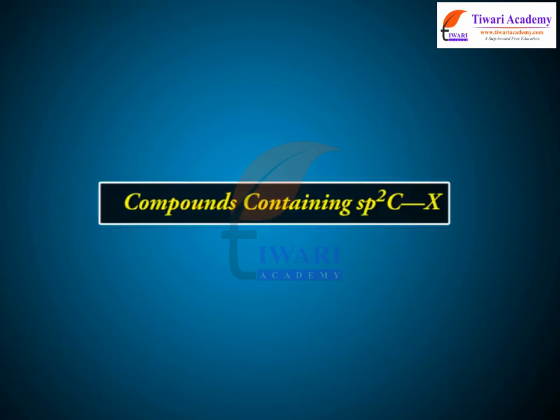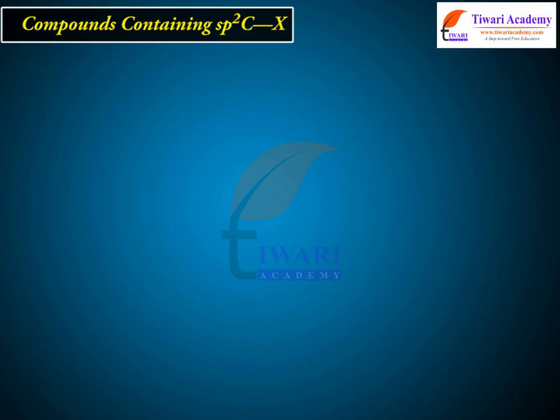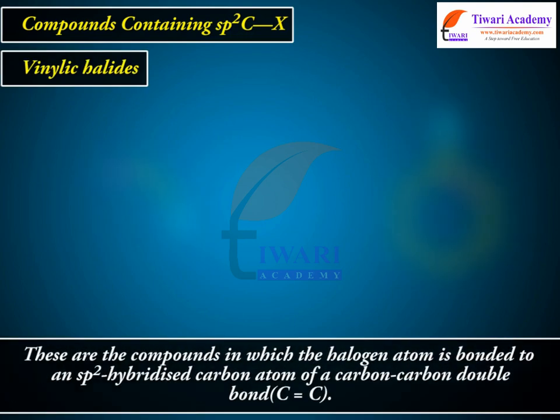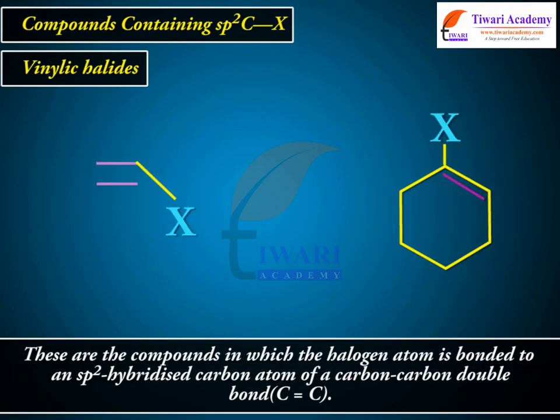Compounds containing Sp2 C–X bonds. Vinylic halides: these are compounds in which the halogen atom is bonded to an Sp2 hybridized carbon atom of a carbon-carbon double bond.